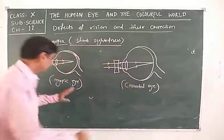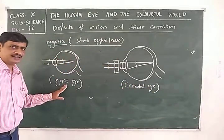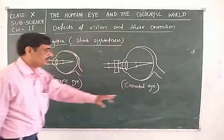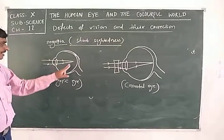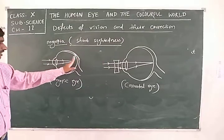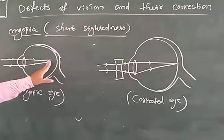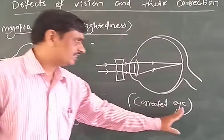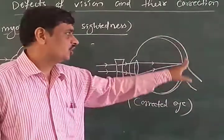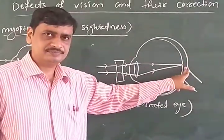In a myopic eye, refraction results in the image forming in front of the retina. But in the corrected eye, using a concave lens, the image is formed on the retina.